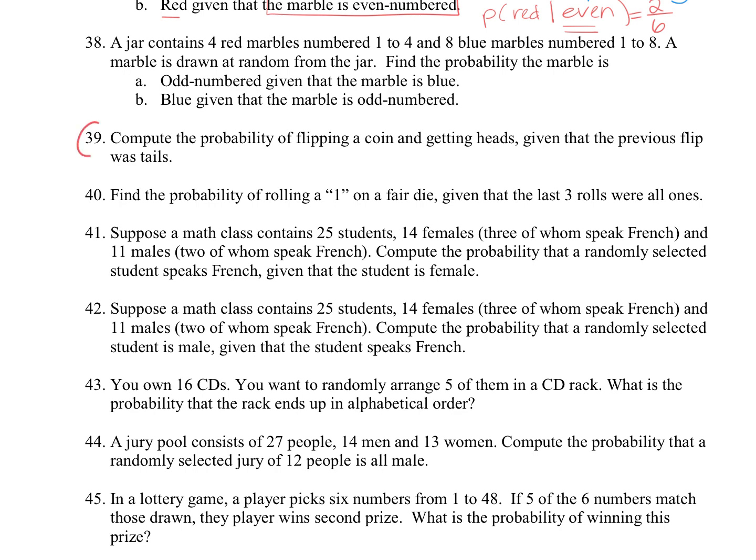For question 39, we want to compute the probability of flipping a coin and getting heads, given that the previous flip was tails. Now, if we're given that the previous flip was tails, it actually doesn't affect us because they're totally independent events.